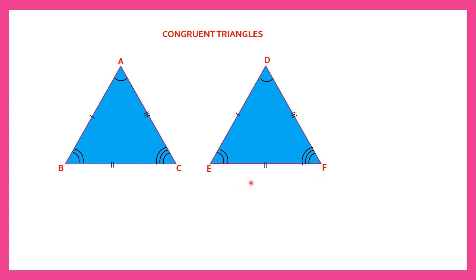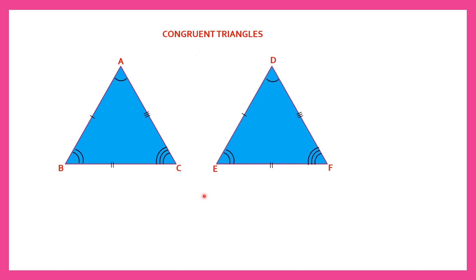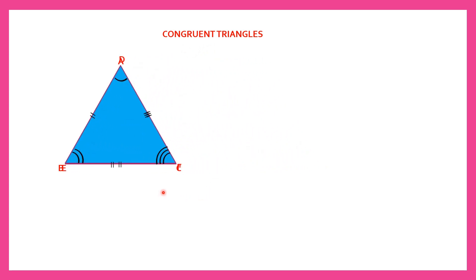So they are the same shape and the same size. When you place one triangle on top of the other and they are exactly coinciding with each other, then they are called congruent triangles. They are coinciding exactly — you can see the vertices have also coincided. So triangle ABC is congruent to triangle DEF. They are the same shape, same size, and coincide exactly when placed one on top of the other.